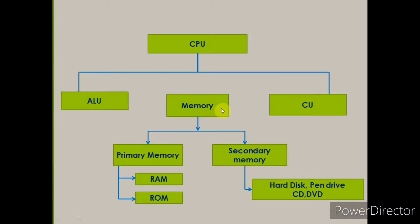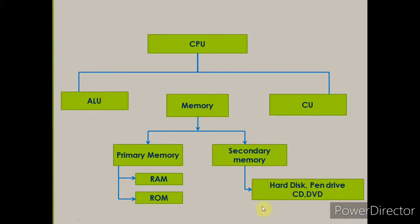Today we will learn about memory. Computer memory is of two types: primary memory and secondary memory. Primary memory is of two types: RAM and ROM. Secondary memory comes in different forms — hard disk, pen drive, CD, DVD — these all are secondary memory.